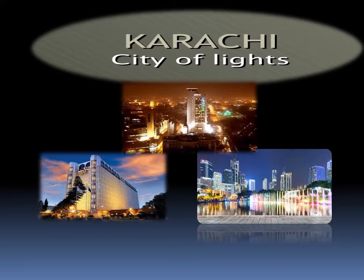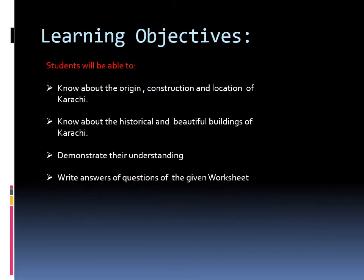Karachi is known as the City of Lights for its vibrant nightlife. The learning objectives of today's topic are: to know about the origin, construction, and location of Karachi; to know about the historical and beautiful buildings of Karachi; and to demonstrate understanding by writing answers to questions on the given worksheet.